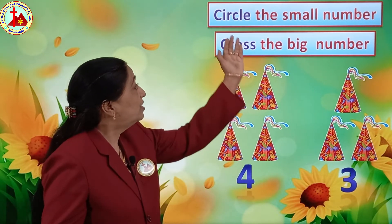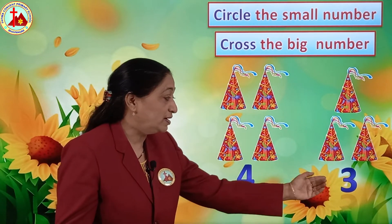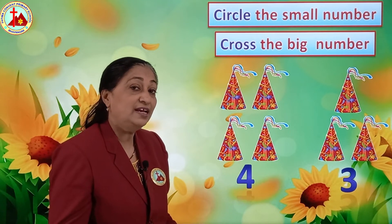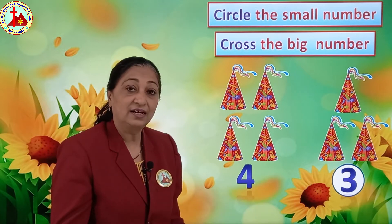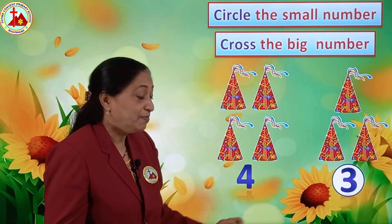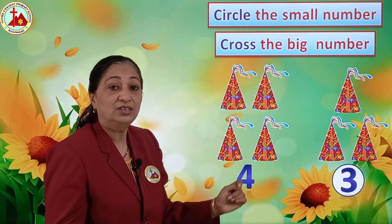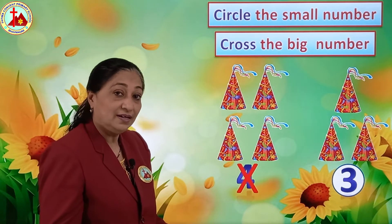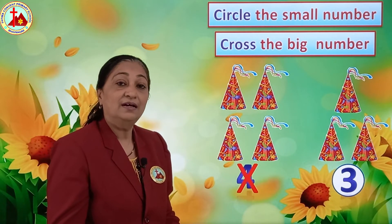Now what we are going to do? Circle the small number. So which is a small number? Number 3. So we will circle number 3. We have circled number 3. And which number is big, bigger than 3? 4. So we will cross the bigger number. We are going to cross number 4. This is a small number and this is a big number.